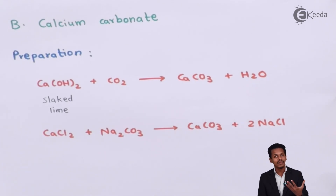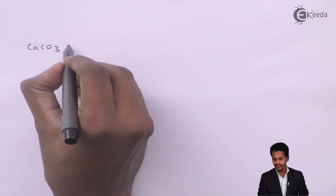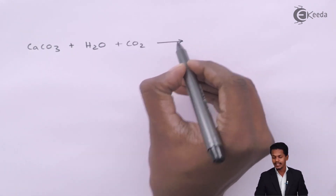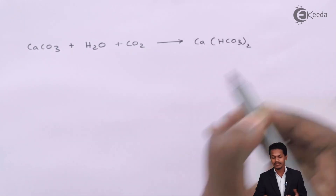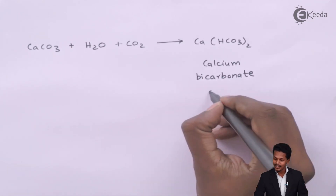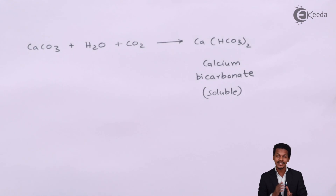If more carbon dioxide is added during the preparation of CaCO3 from Ca(OH)2, the result is a soluble salt — calcium bicarbonate — which is soluble in water. Since calcium bicarbonate is soluble, we cannot confirm whether calcium carbonate has formed. Therefore, we must add only a controlled amount of carbon dioxide to obtain a perfect amount of calcium carbonate. These are precautions to keep in mind.